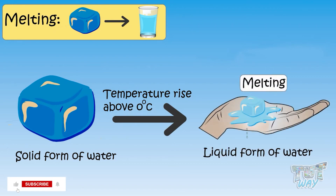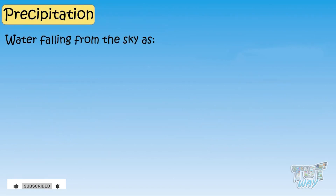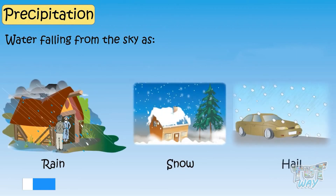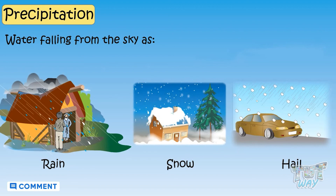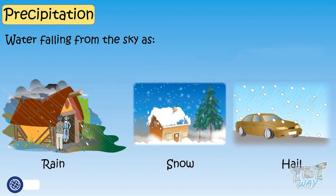Now let's learn what precipitation is. Water falling from the sky as rain, snow, or hail is called precipitation. Rainfall, snowfall, and hailstorms are all examples of precipitation.